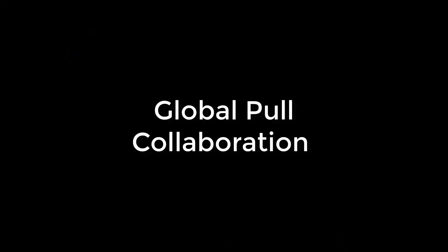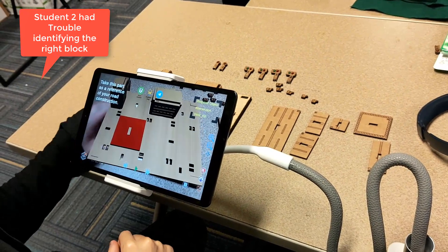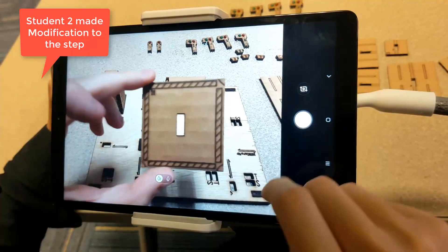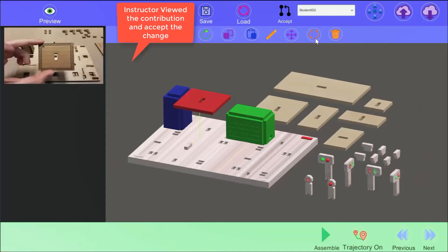We also use another interaction modality based on the pool-based model, which involves instructors selecting the most valuable local contribution made by students to improve the original project and make it available to the class. This iterative model made possible by Collaborative AR is unique to our platform. Student 2 is severely confused about the correct choice for a component and its orientation, so the student pushes a very valuable contribution to the cloud. The instructor decides that the contribution is very useful to clarify the project, approves of it, and accepts the global pool.